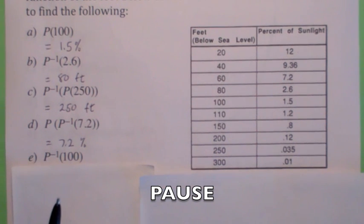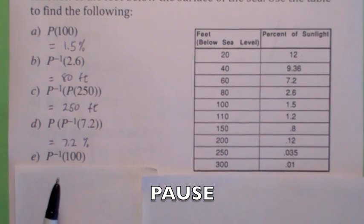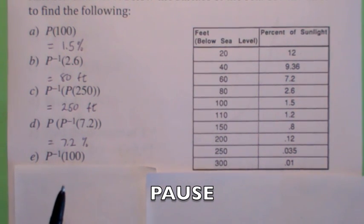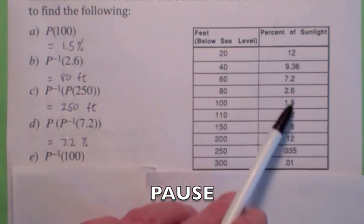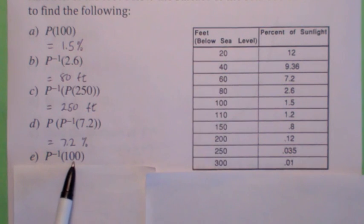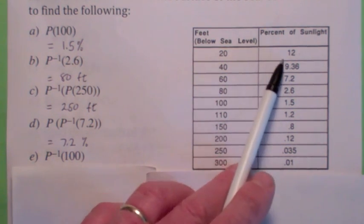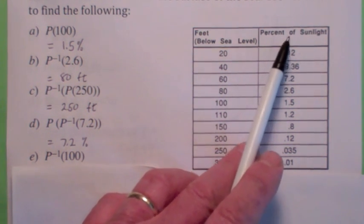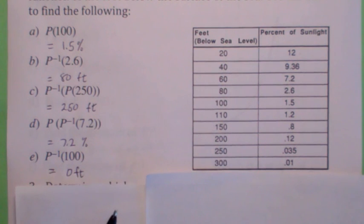Here's a sneaky one. See if you can figure this out. What's p inverse of 100? It's the value of x when y is 100. Now, y equal 100 is not on the table, but think about it. 100% of the sunlight penetrates, wouldn't it have to be the surface? That'd have to be the surface of the ocean. So that's the answer, 0. Pretty sneaky, huh?